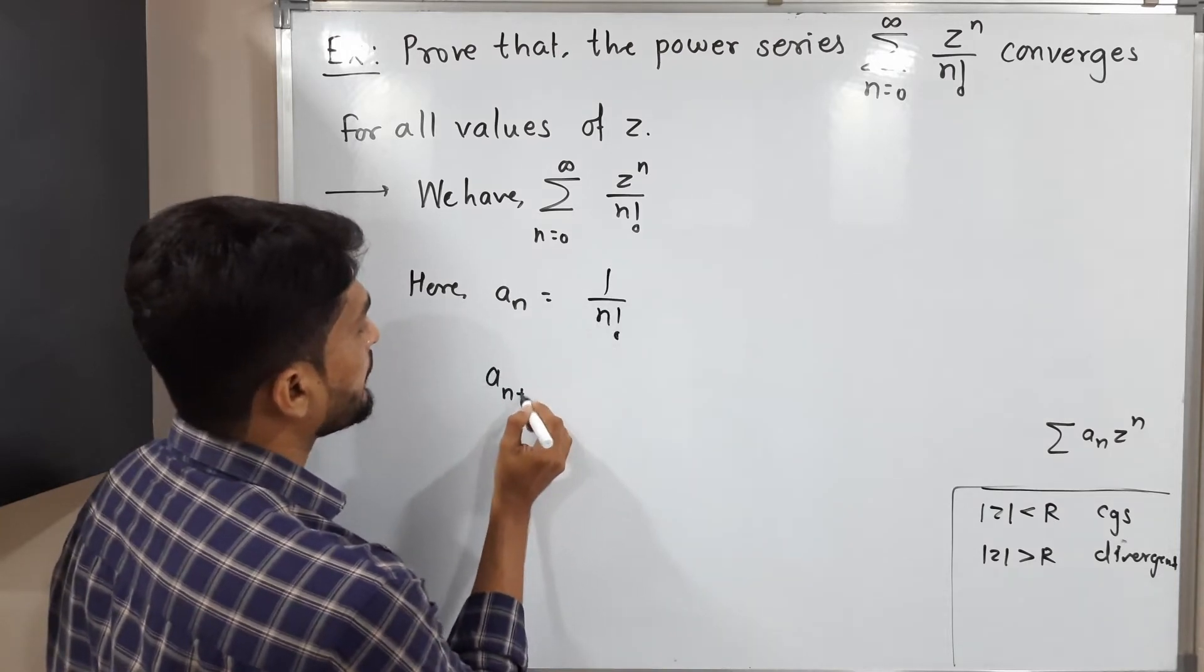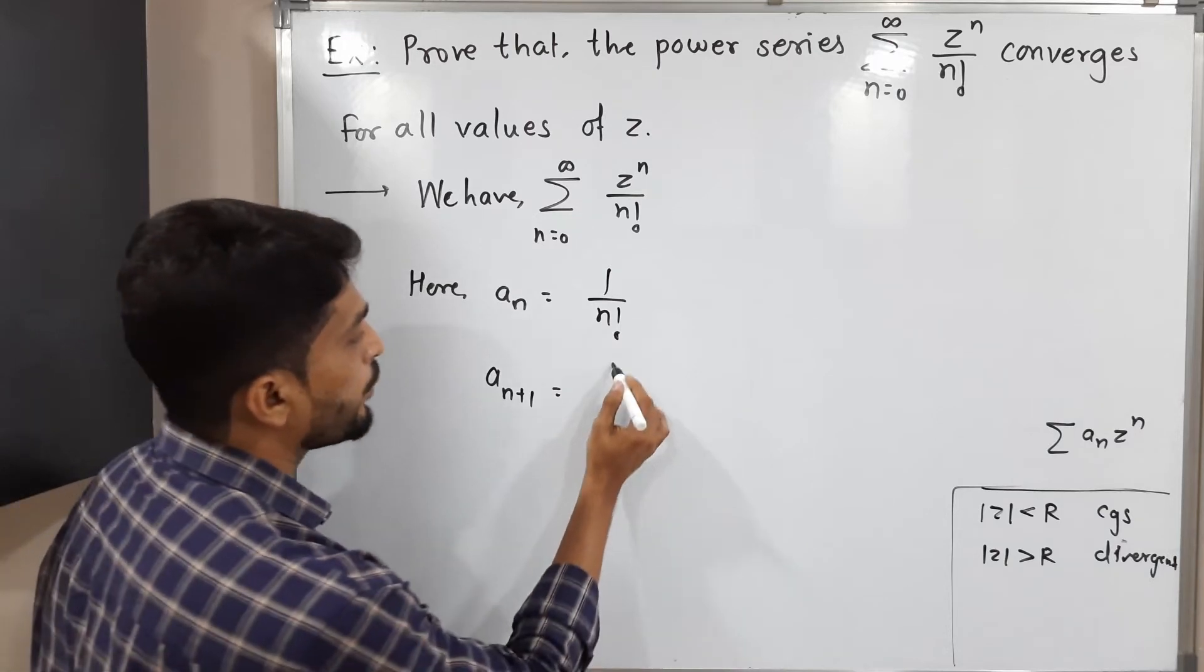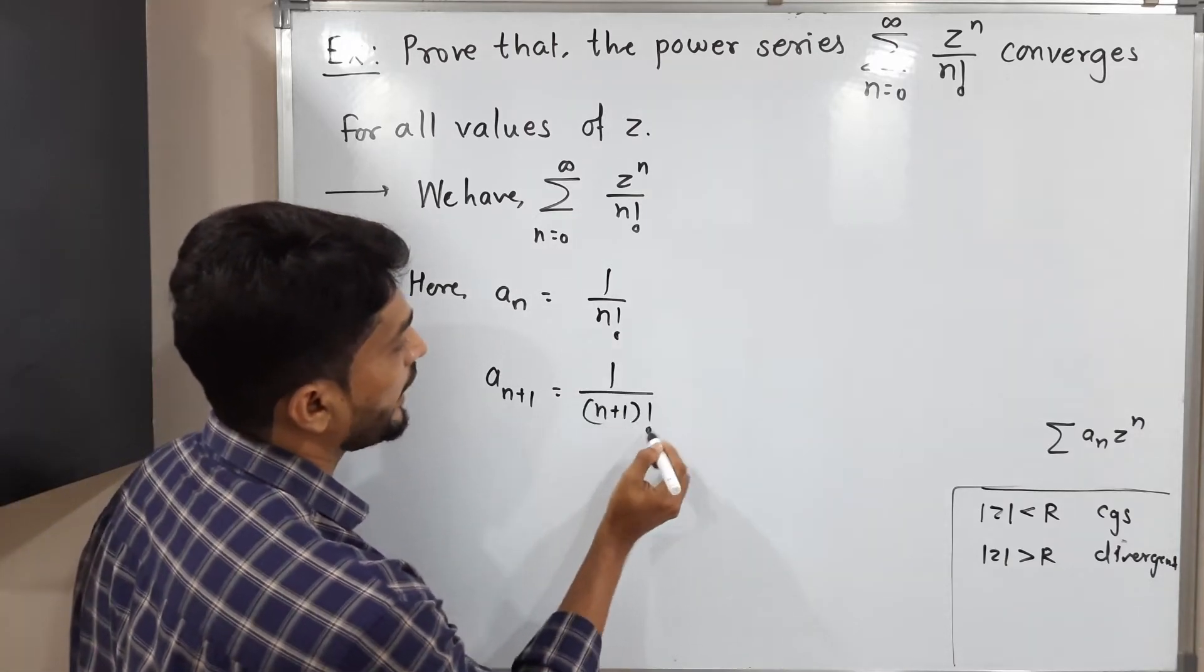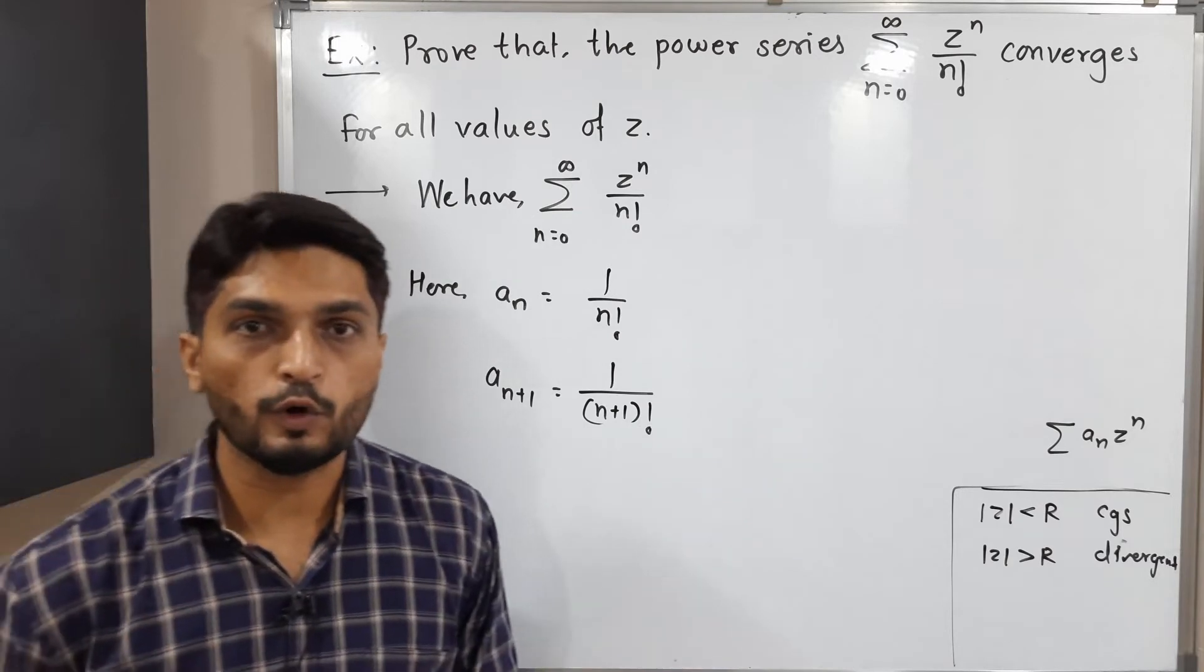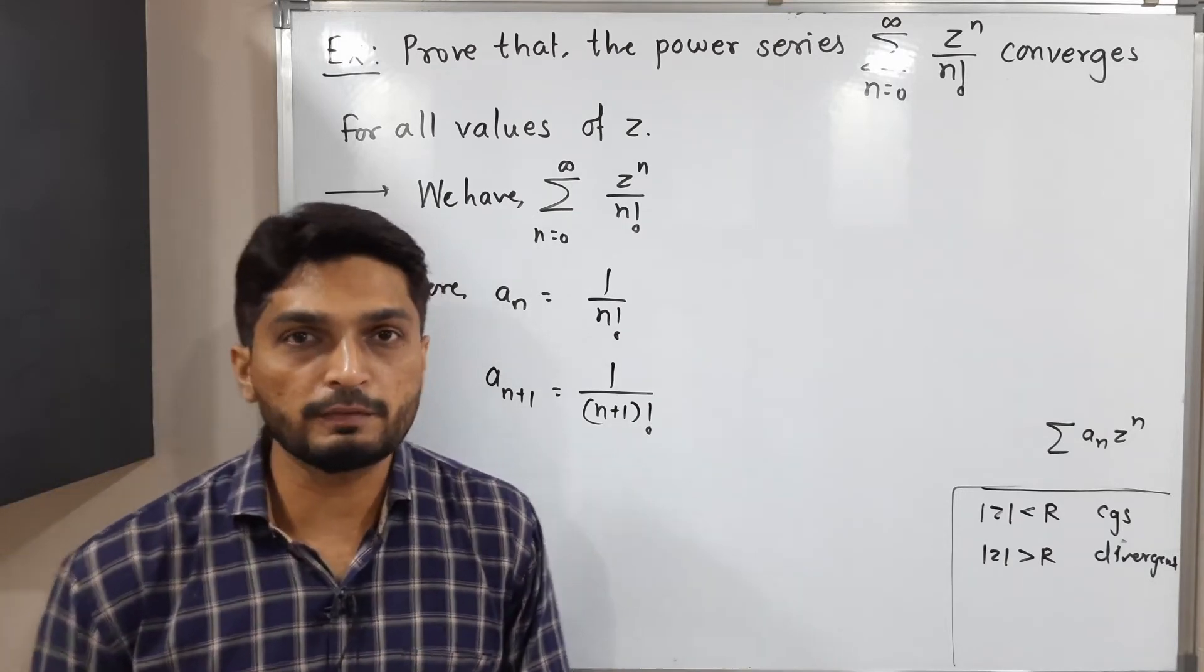Let us find a_{n+1}. That means simply replace n by n plus 1. So we will have 1 upon n plus 1 factorial. So let us apply the formula of radius of convergence which we have already seen in our previous video.